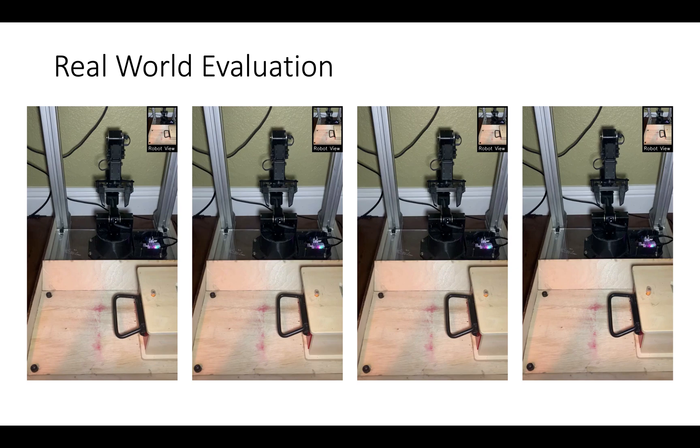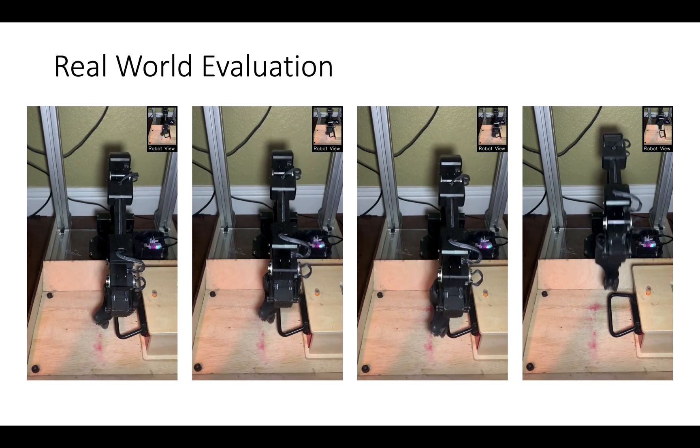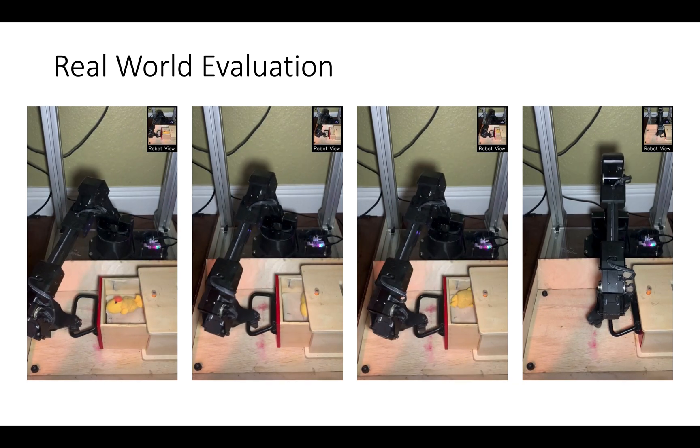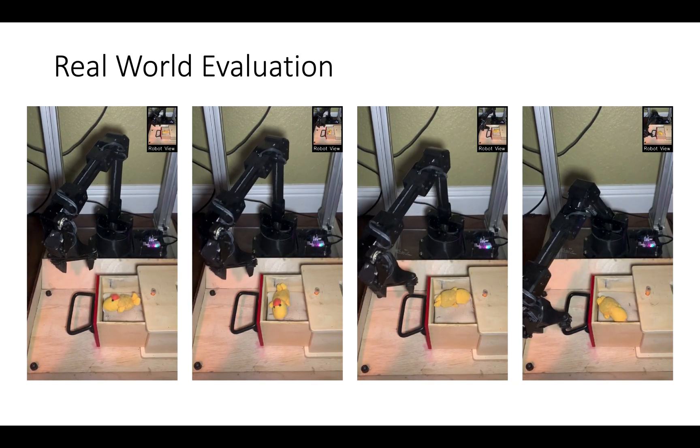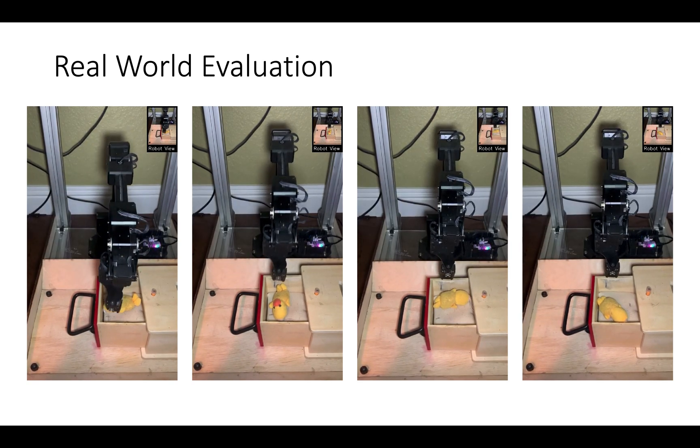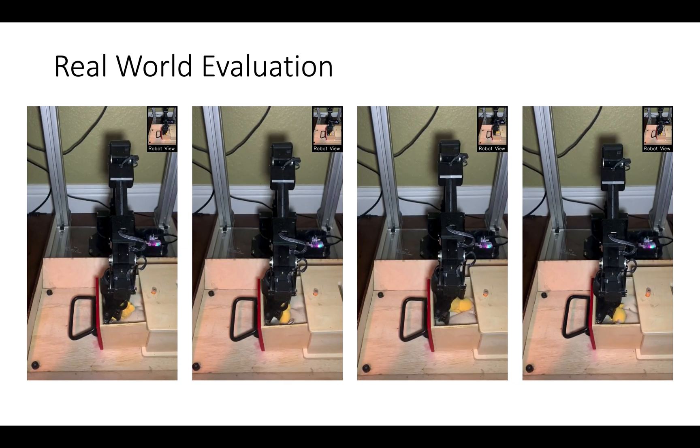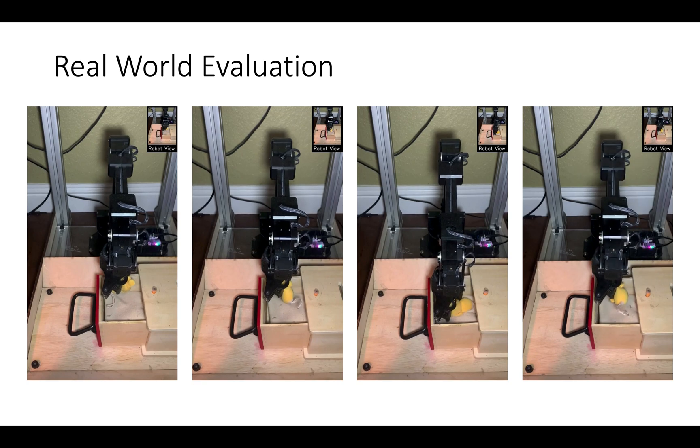We also evaluate our method on a real robot where we see that our learned policy is able to open a drawer and take an object out, even though it never saw a single trajectory executing the entire task during training. Our method succeeds on seven out of eight trials, while our strongest baseline based on behavior cloning was unable to solve the task even for a single trial. Here are some example rollouts from our learned policy.